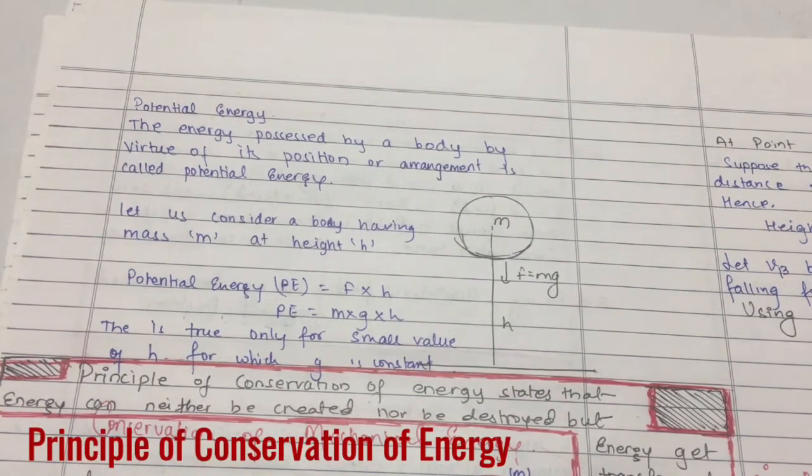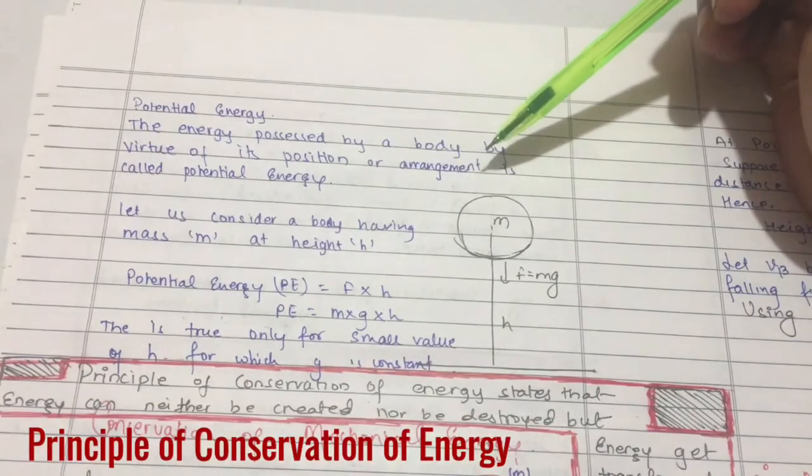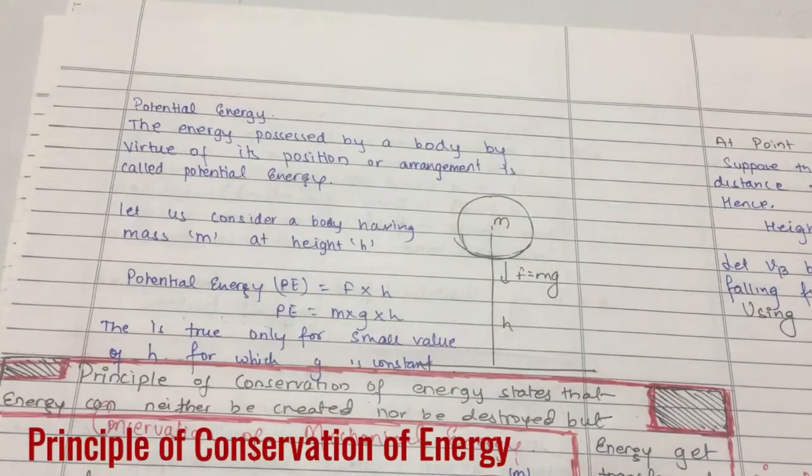Hello guys, once again I am back with another video and that is potential energy. So today we are going to talk about potential energy. It's a simple definition: the energy possessed by a body by virtue of its position or arrangement is known as potential energy. Let us consider a body having mass m.